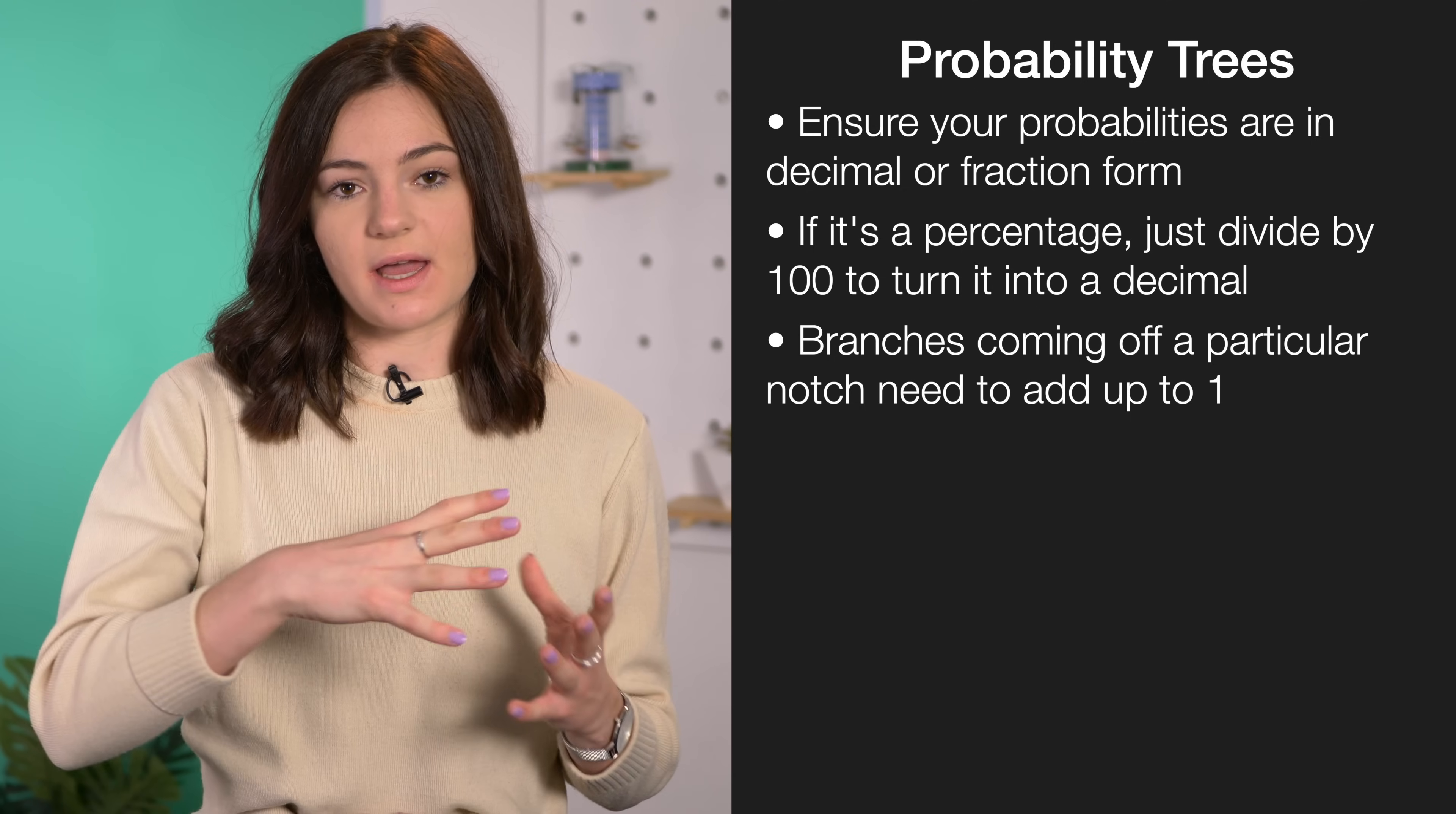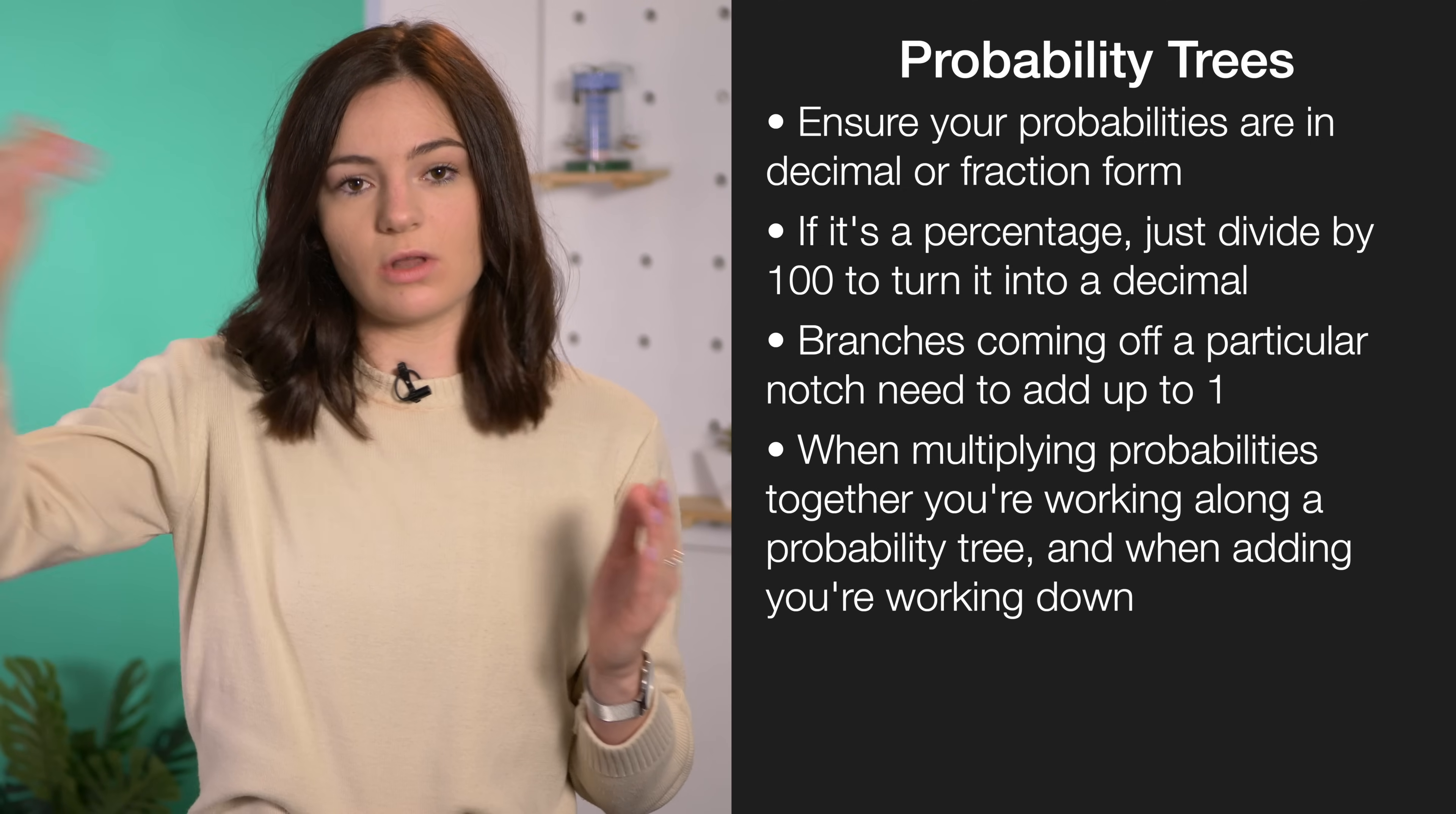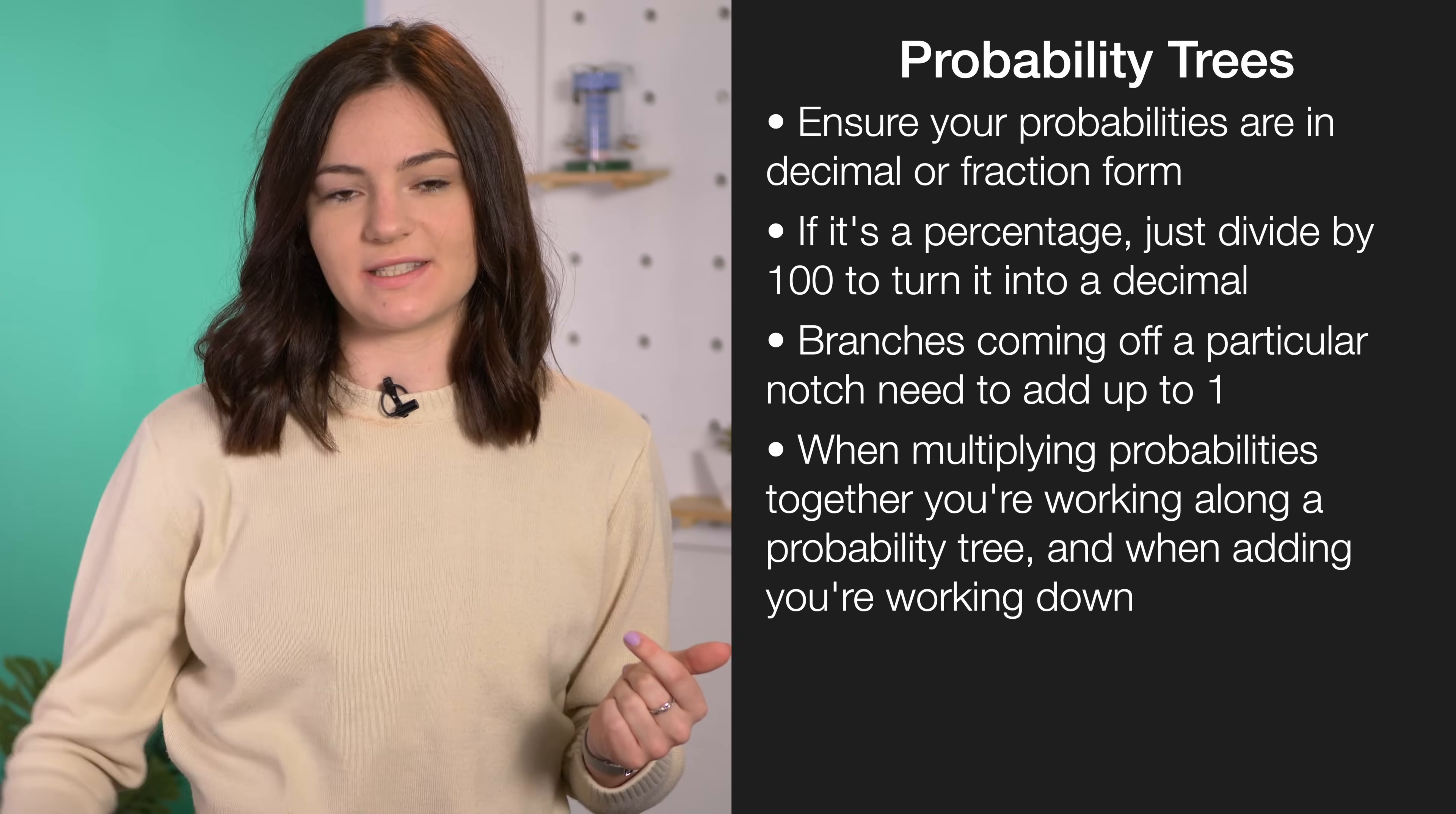Lastly, when you are multiplying probabilities together, you're working along a probability tree and when you add them together, you're working down.